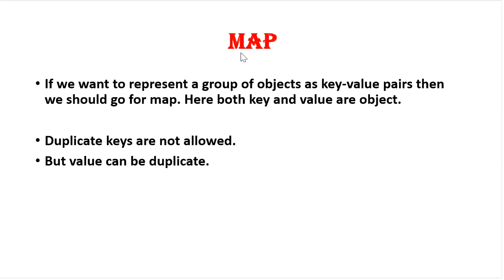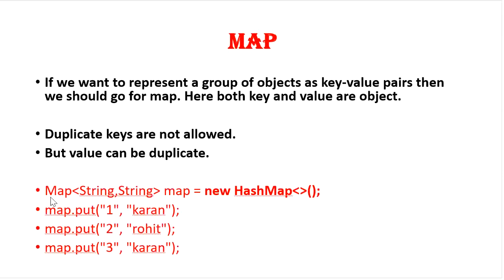Let's start with the root interface, that is Map. Map is not the child interface of the Collection interface. If you want to represent a group of objects as key-value pairs, then we should go for Map. Here both the key and values are objects. Duplicate keys are not allowed in Map, but values can be duplicate.